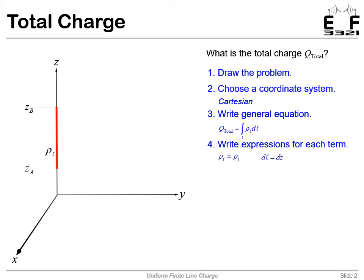Given that integral, now we can write expressions for each term. Well, rho L is just rho L, and it would be something else if it was not uniform, for example. The differential length DL, the way we have it drawn, is running along the Z-axis, so our differential length DL is just DZ.